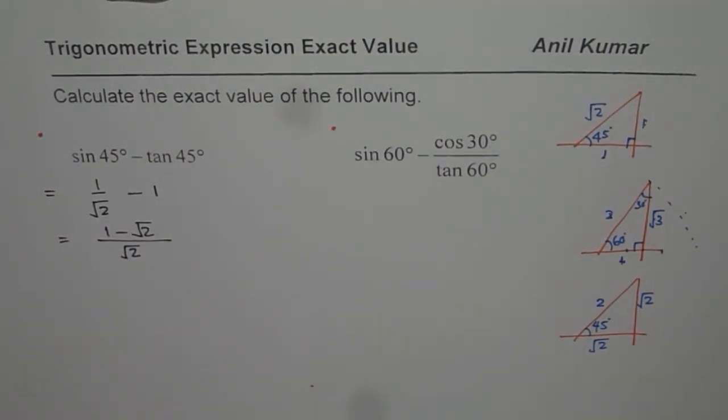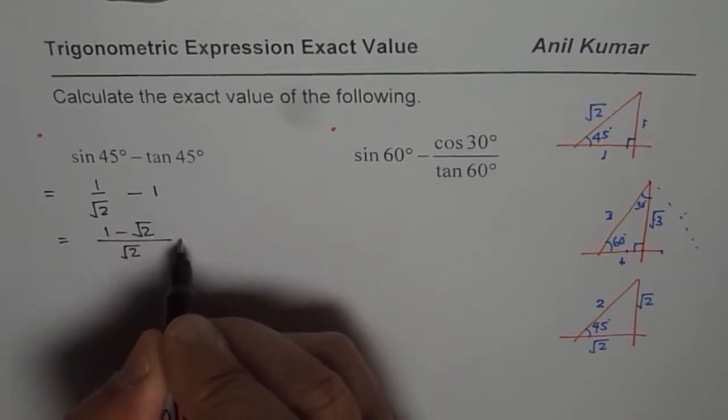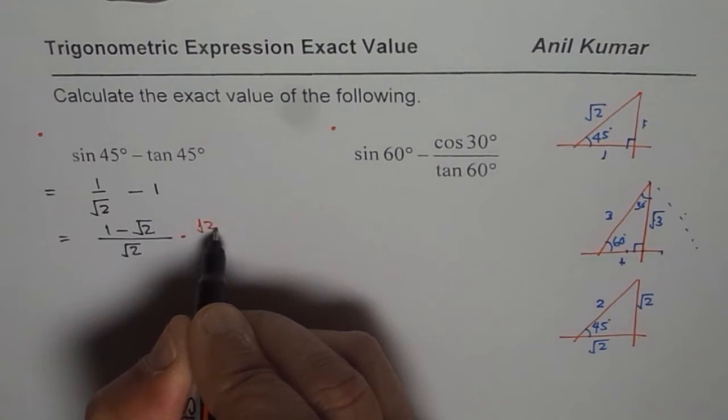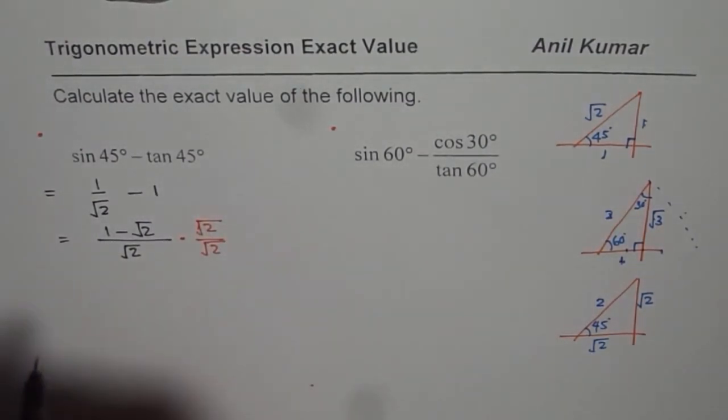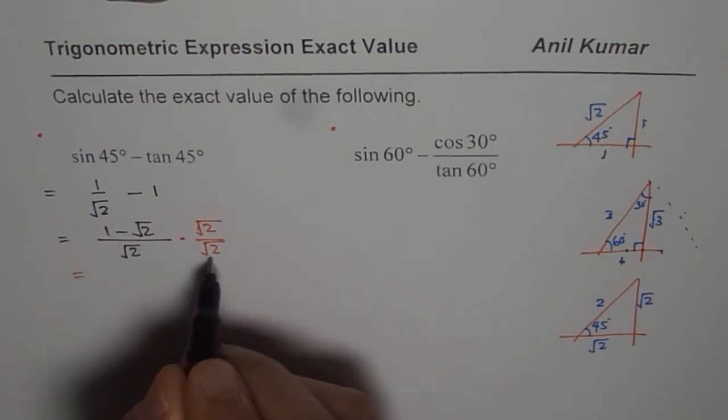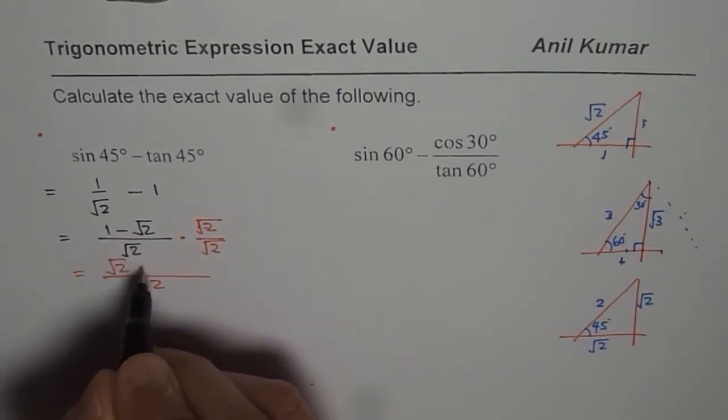Now it is important that we should write always our answer with no radical in the denominator. So we need to rationalize. So to rationalize, I have to multiply and divide by square root 2. That is important. So once I do that, what do I get? I get in the denominator 2, square root 2 times square root 2. In the numerator, I get square root 2 minus square root 2 times square root 2 is 2. That is what I get.